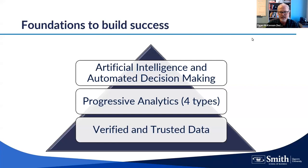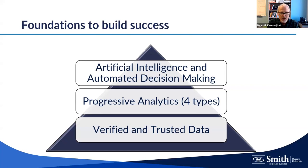If you don't have good, clean data, all the rest of the pyramid will fall apart. You need that foundational piece — the trusted and verified data. After that, we go through four different types of what we call progressive analytics. Each type is equally important; they just have different functions and help you make evidence-based decisions. Ultimately, what most organizations want to do is get into artificial intelligence and automated decision making, where models can help in real time rather than relying on people.